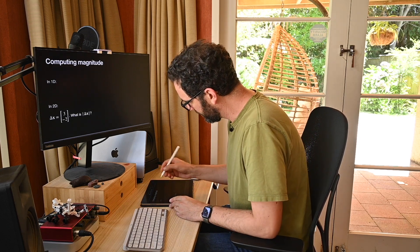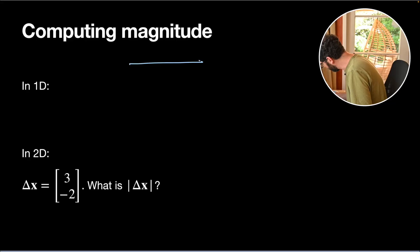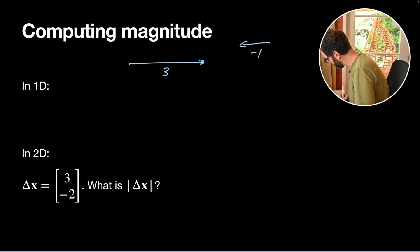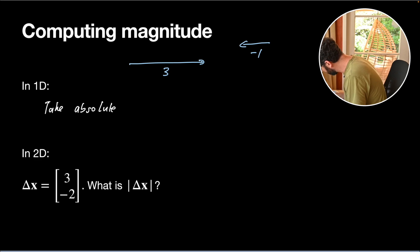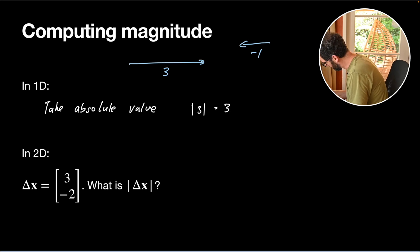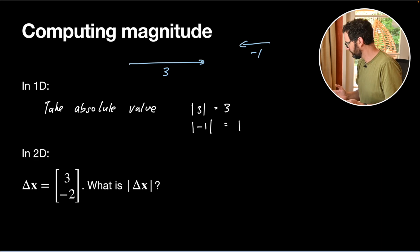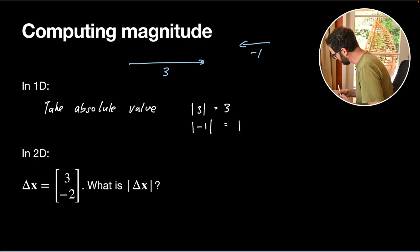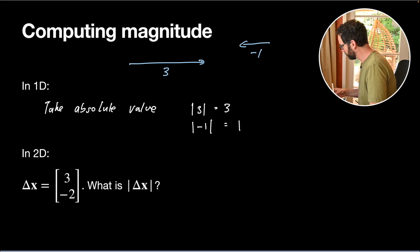One more thing: how do you compute the magnitude of a vector — the length of the arrow? In one dimension it's easy: we just take the absolute value. The magnitude of the vector 3 is just 3; the magnitude of the vector negative 1 is just 1. The plus or minus just determines whether it points right or left; the magnitude is always the number part without the sign.